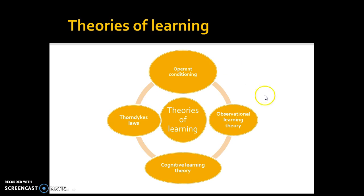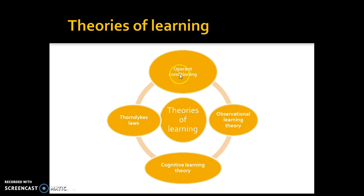This is our last little subtopic for acquiring movement skills. We have to look at three theories and then three laws via Thorndike. These kind of link quite closely to operant conditioning, but we'll look at them separately.